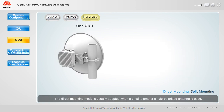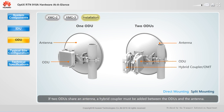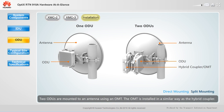The direct mounting mode is usually adopted when a small diameter, single polarized antenna is used. If one ODU uses one antenna, the ODU can be directly mounted to the back of the antenna. If two ODUs share an antenna, a hybrid coupler must be added between the ODUs and the antenna. An ODU can also be directly mounted to a small or medium diameter, dual polarized antenna, with two ODUs mounted using an OMT.